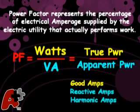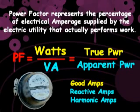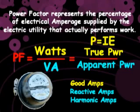Good electrical amps come into your residence, but some of your household appliances are going to convert those good amps into bad reactive amps and bad harmonic amps. The kilowatt-hour meter the electric utility uses to meter your electricity measures the good amps used to produce watts, but it ignores the good amps that your appliance has turned into bad amps. Therefore, watts equals current times voltage, where I equals only the good amps used to produce watts.